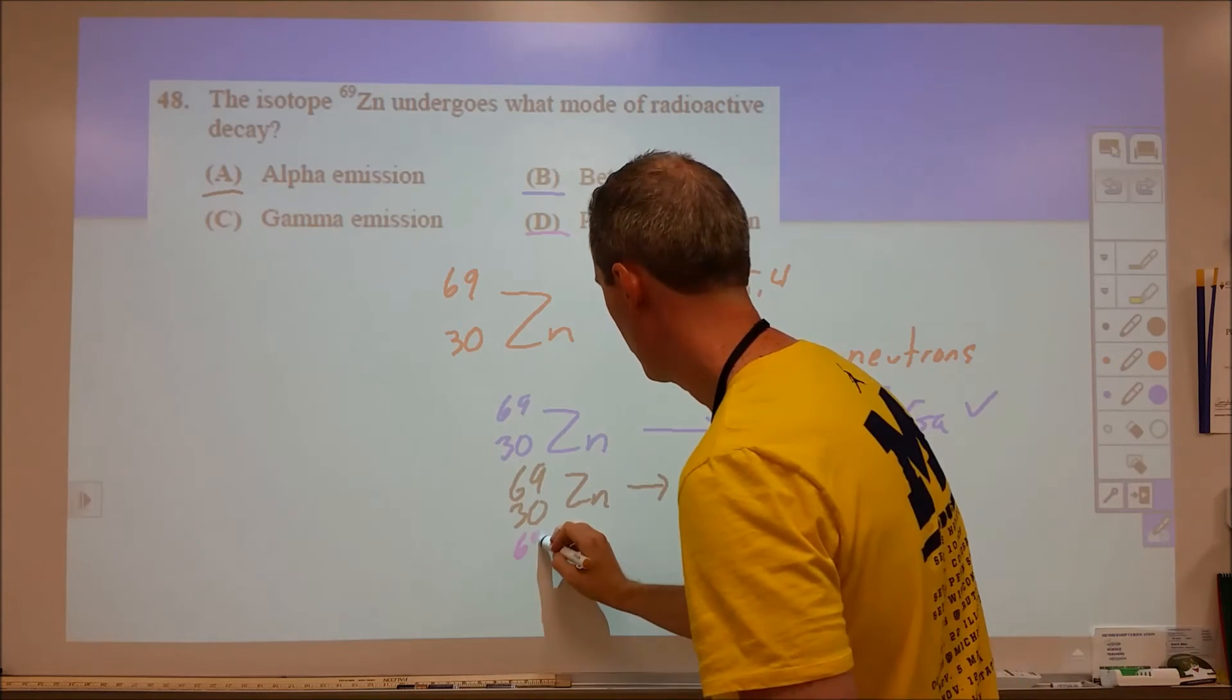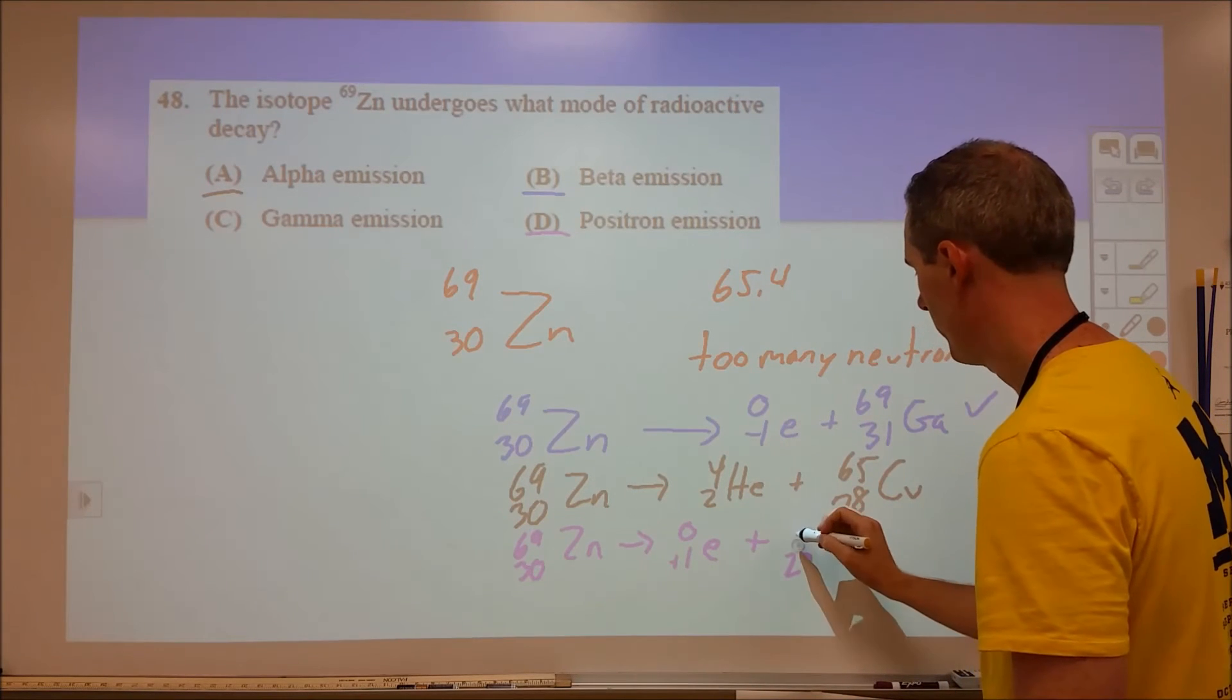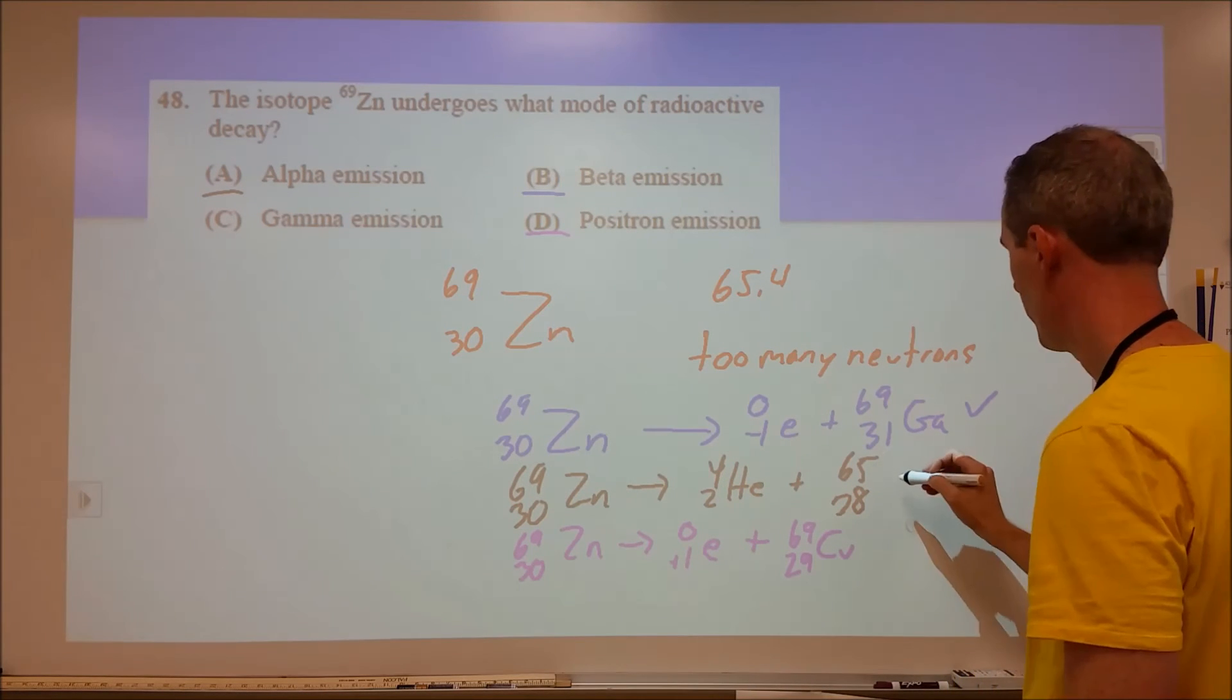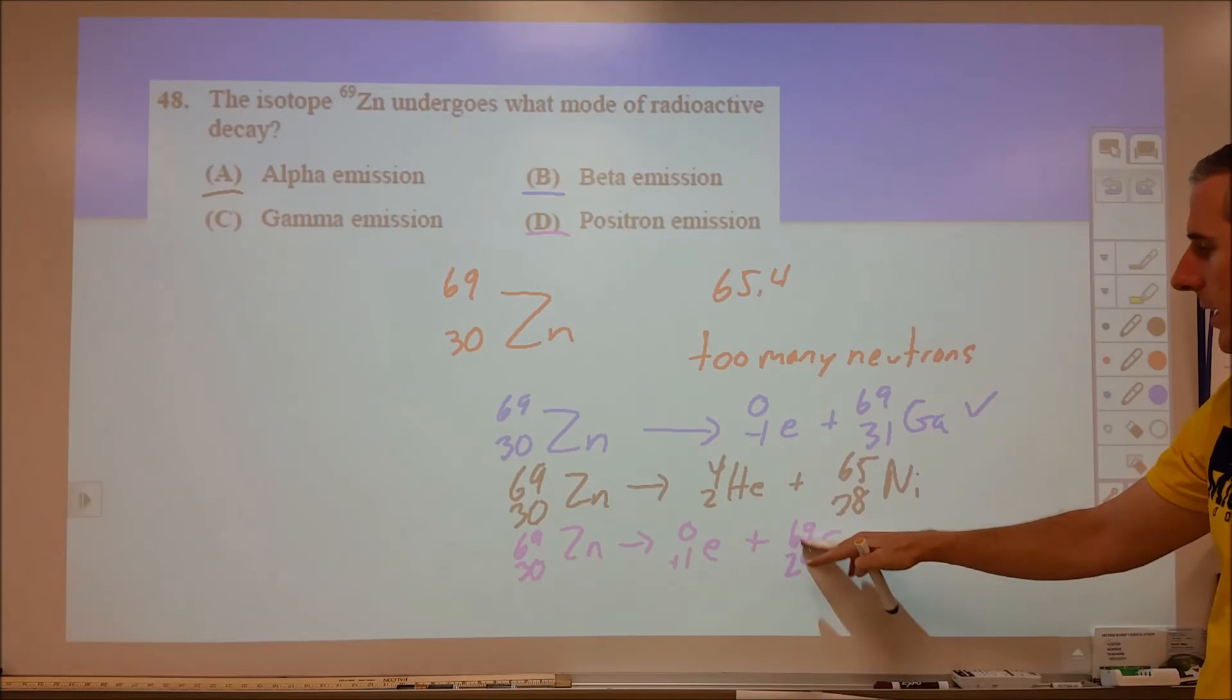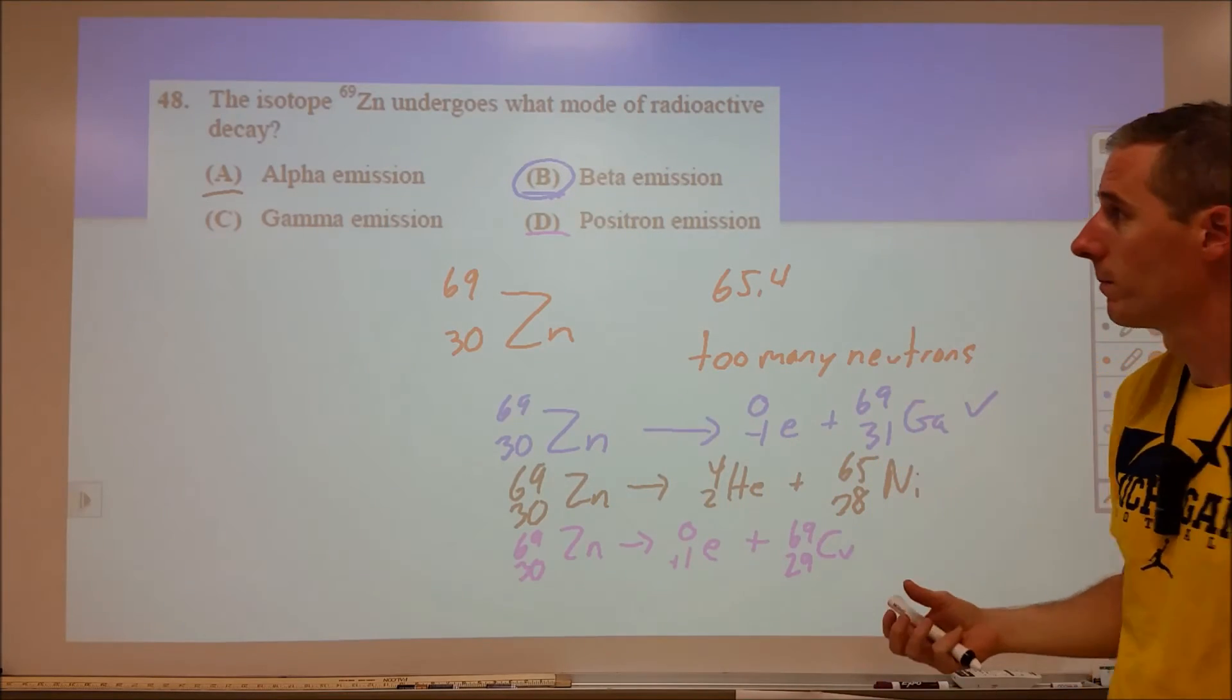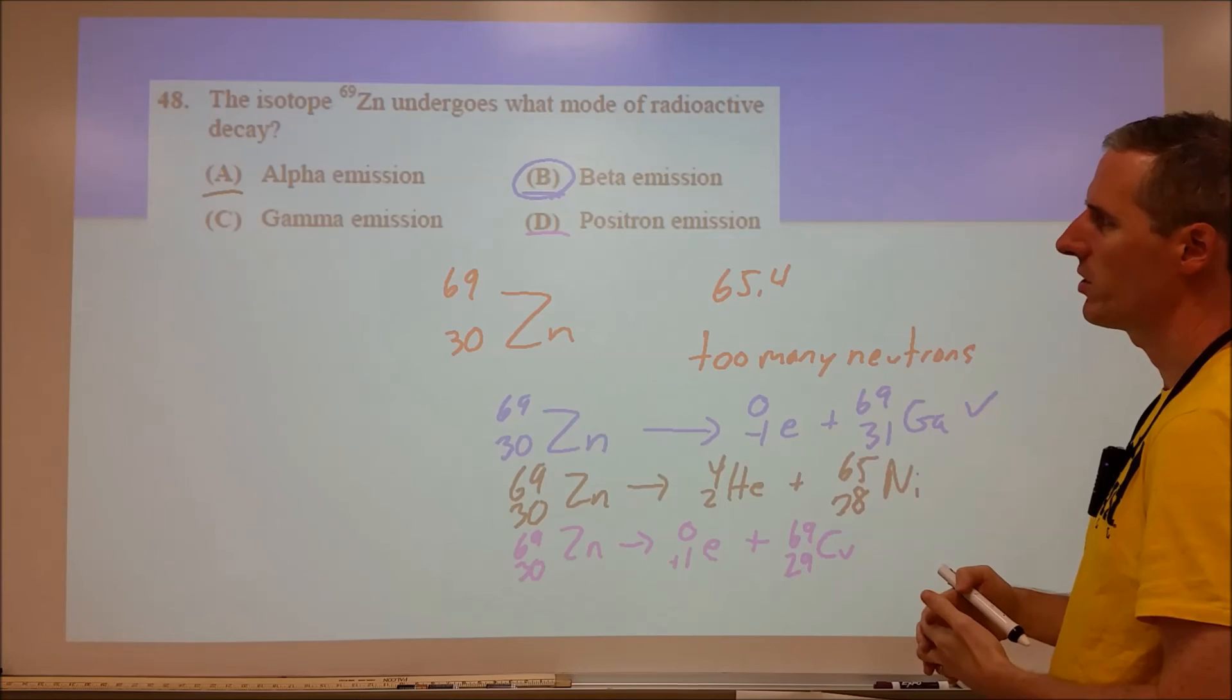If we go with positron emission, we're going to produce a positively charged electron, which is going to drop the number of protons and add a neutron. This should be nickel. Now we're going in the wrong direction. We're adding things that we don't want to. So at this point, I'm going to stick with beta. For gamma, gamma's not going to change your numbers. Gamma is just a piece of light. If you produce a gamma ray, you're not changing your numbers. That would be a case that's usually involved in other radioactive decays. I wouldn't look for that as an answer on any of these.